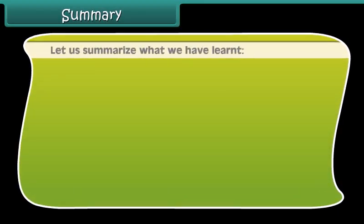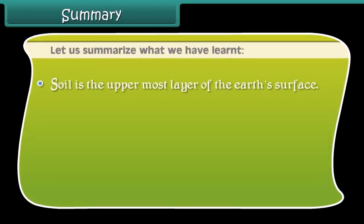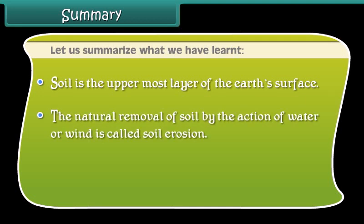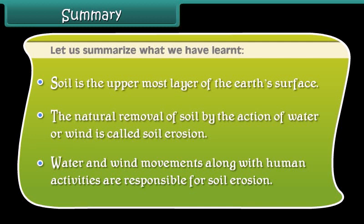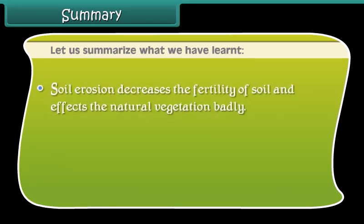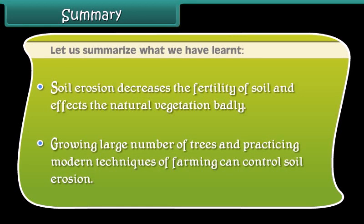Let us summarize what we have learned. Soil is the uppermost layer of the Earth's surface. The natural removal of soil by the action of water or wind is called soil erosion. Water and wind movements, along with human activities, are responsible for soil erosion. Soil erosion decreases the fertility of soil and affects natural vegetation badly. Growing a large number of trees and practicing modern techniques of farming can control soil erosion.